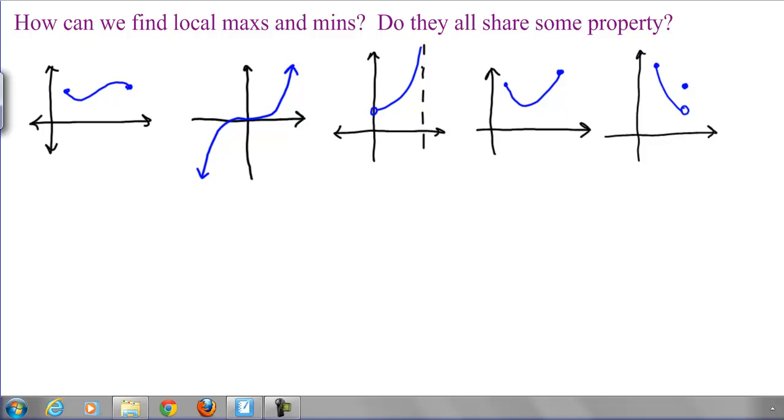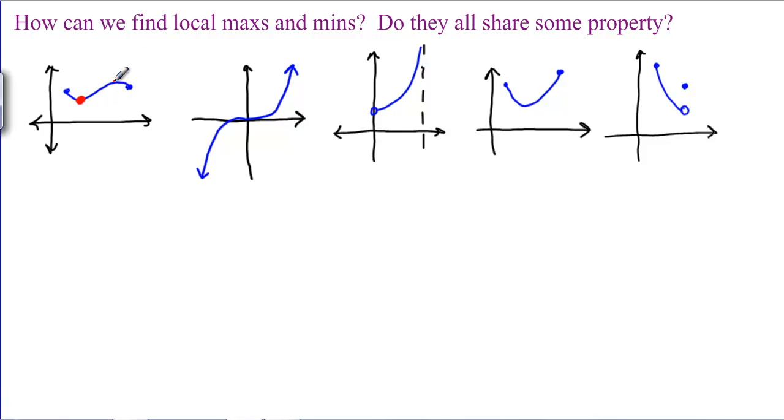If we have this is a local min, this is a local max, this one doesn't have any, this one doesn't really have any, this is a local min and this one doesn't have any. What do these all seem to have in common?